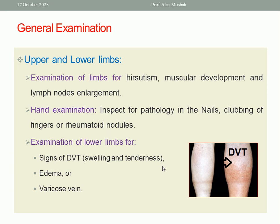Finally, upper and lower limb examination includes assessment for muscular development, hirsutism, and lymph node enlargement. Hand inspection looks for nail pathology, clubbing, rheumatoid nodules, abnormal pigmentation, or ulceration. Lower limb examination checks for signs of DVT such as swelling, tenderness, and redness — especially important in pregnancy as it is a risk factor for DVT. Also examine for edema and varicose veins.